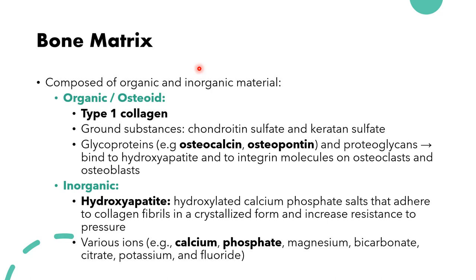Hydroxyapatite is the most important component of the inorganic material. It is a combination of calcium and phosphate that combines to produce calcium phosphate salts. Hydroxyapatite sticks to or adheres to the type 1 collagen fibrils produced by osteoblasts — so the inorganic component sticks to the organic component, forming a crystallized structure that contributes to the bone's strength and resistance. The two most important ions or minerals necessary for bones are calcium and phosphate.